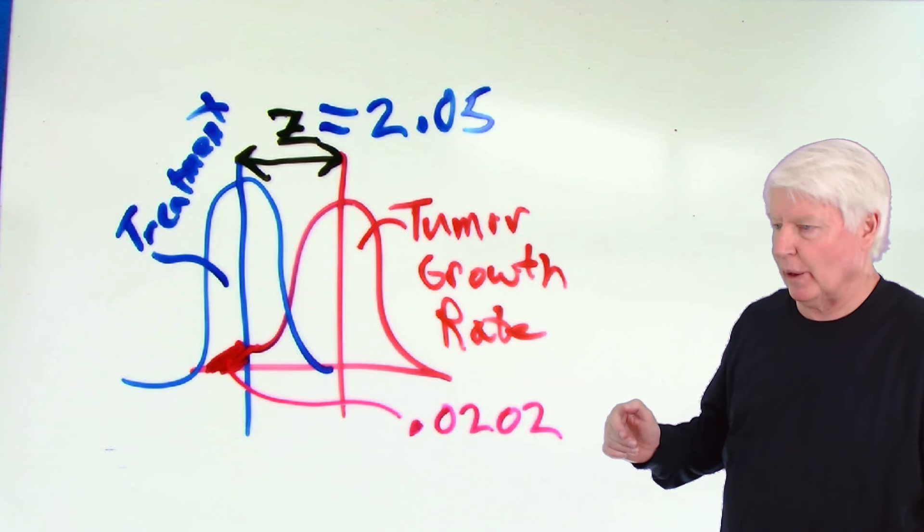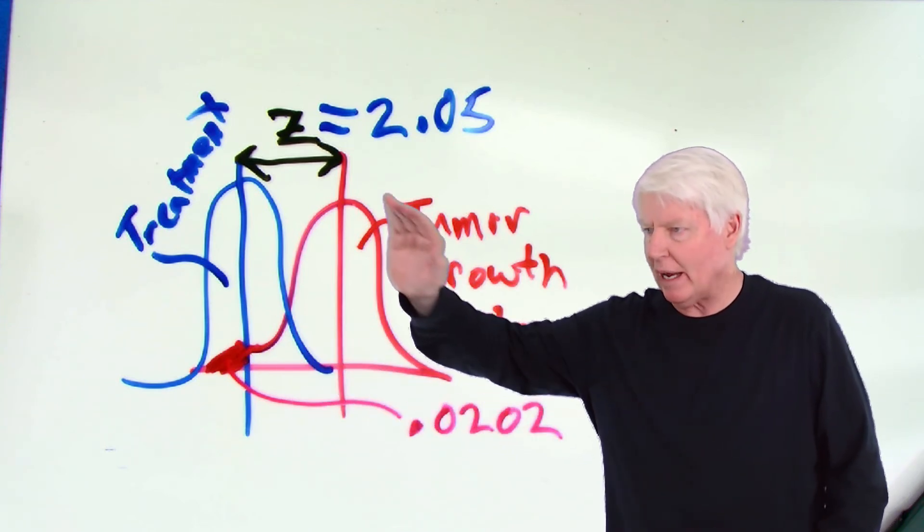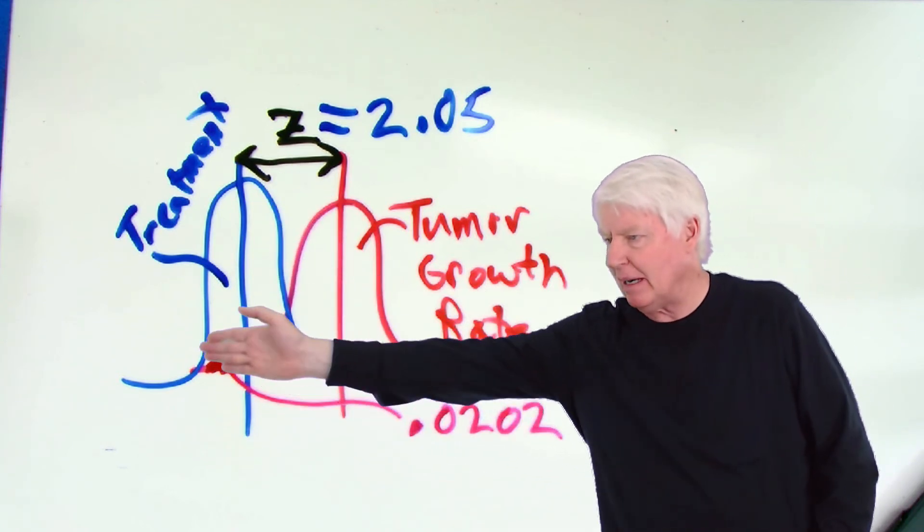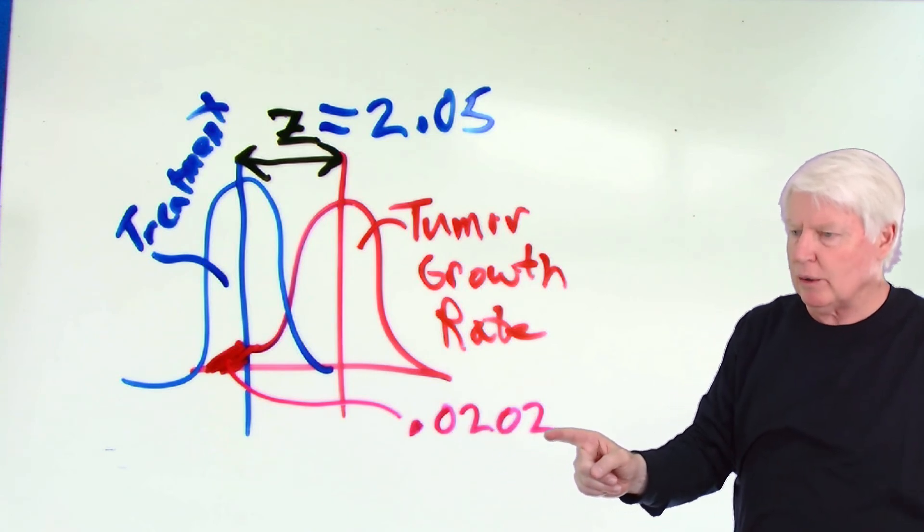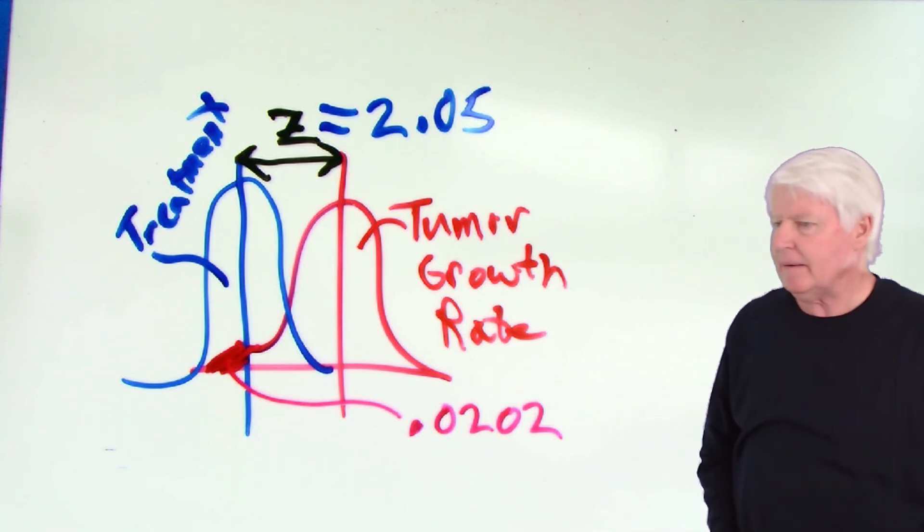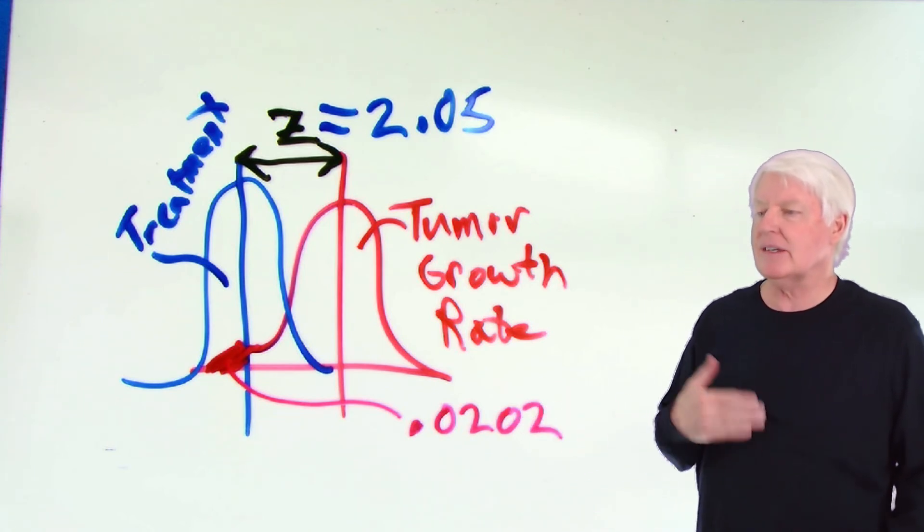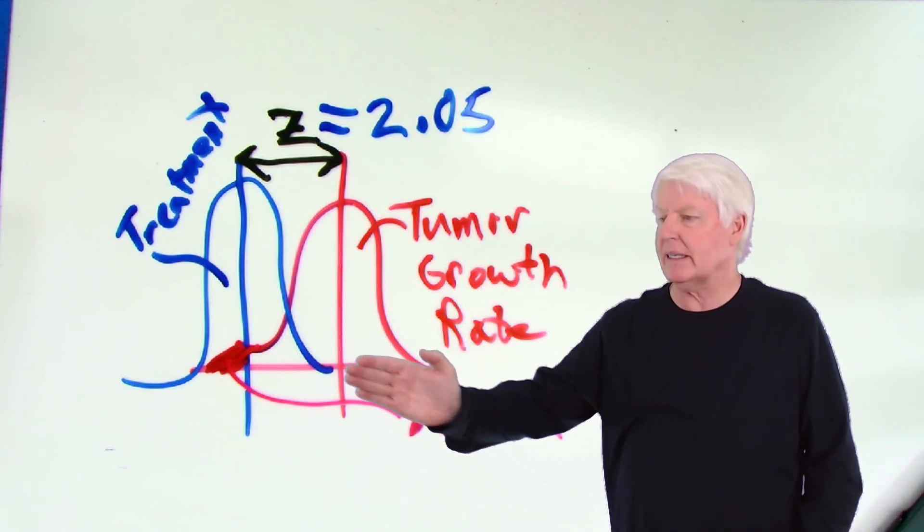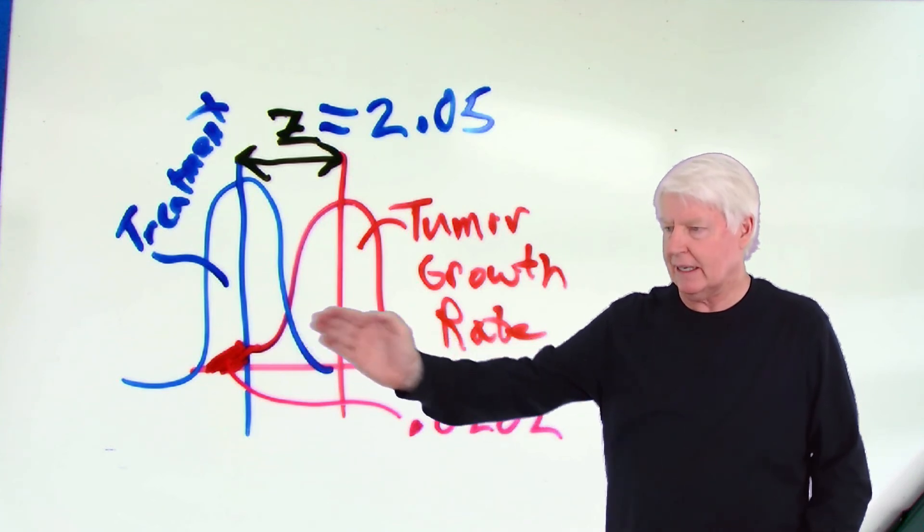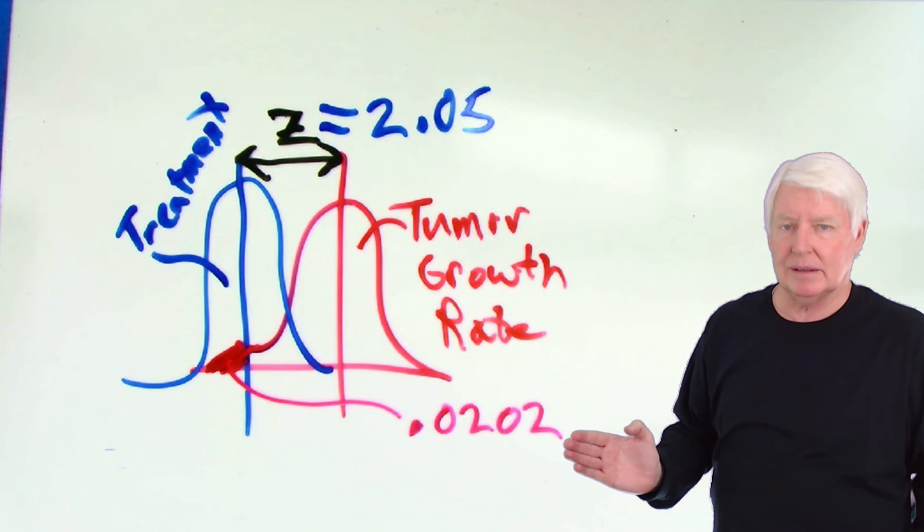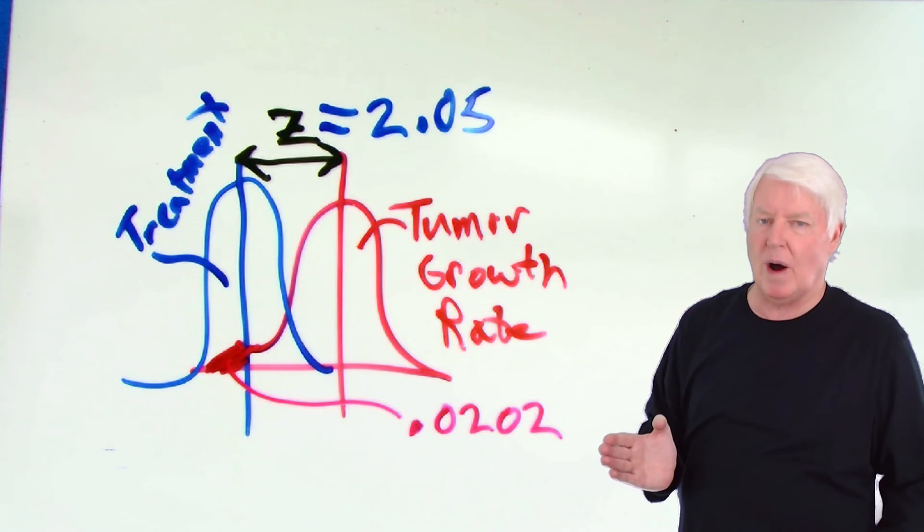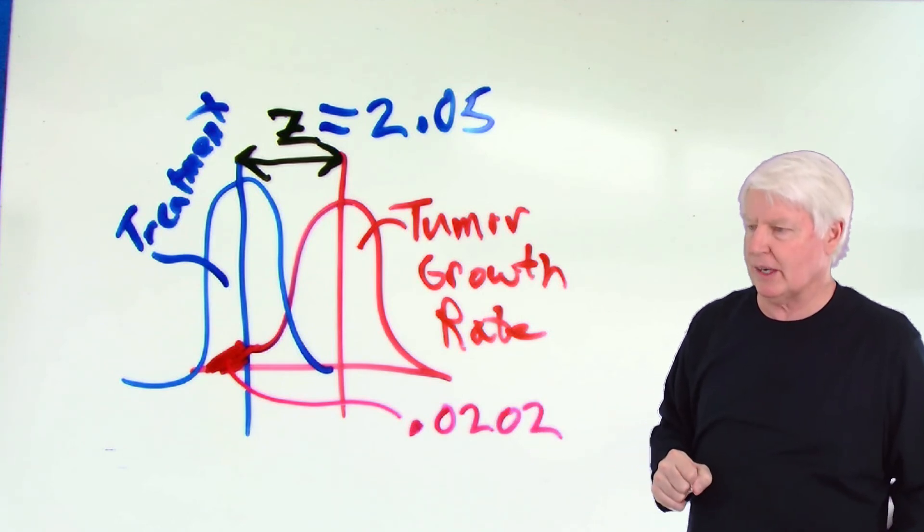So here we are back at the whiteboard. Notice I put that in, the overlap, that this red distribution overlaps the mean of the blue distribution. That proportion that lies above that average from the red distribution is 0.0202, or if you multiply it by 100, it would be 2.02%. And what does that mean? That means if I said, hey, this treatment impacts cancer growth rate, tumor growth rate, that is the probability that I'm wrong. That would say, okay, you said that it made a difference. This is the probability that you're wrong in making that decision. 2.02%.